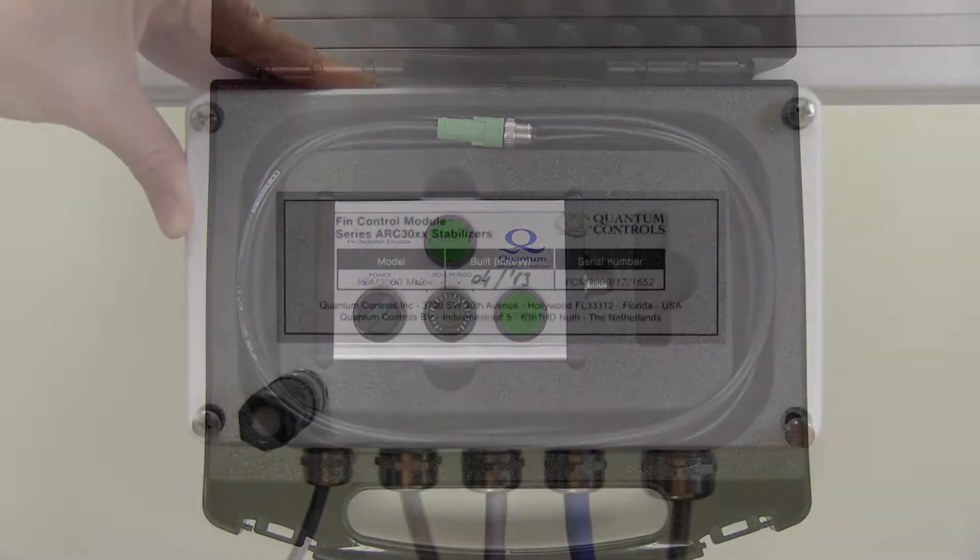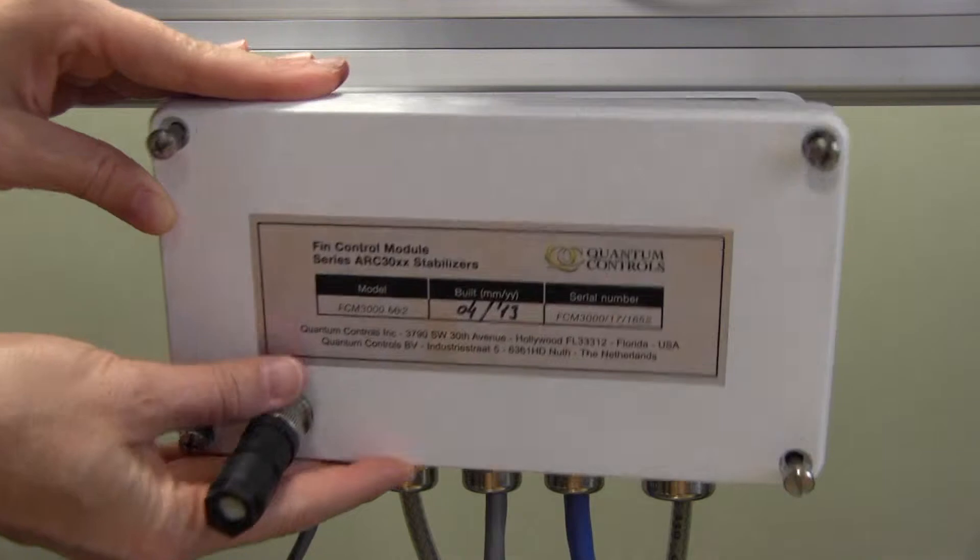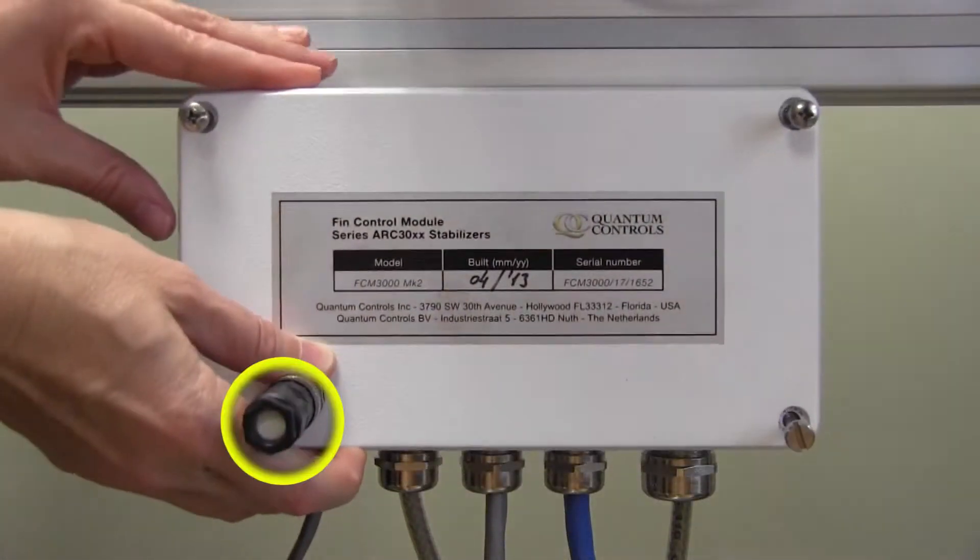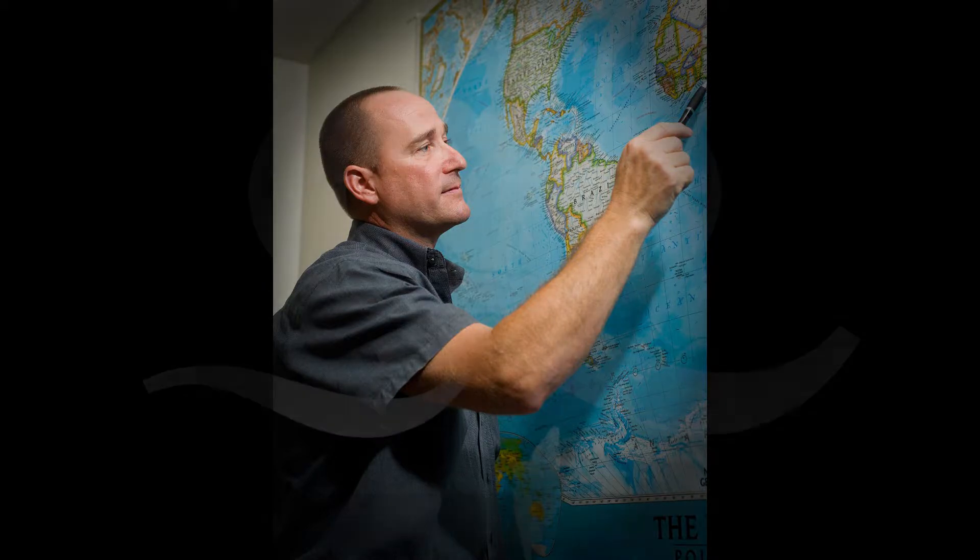In order to use the FIN Oscillation Simulator, the FIN or effector control module must be modified with an additional circuit board and this external connection point. If these are not present, please consult with Quantum to arrange for their installation.